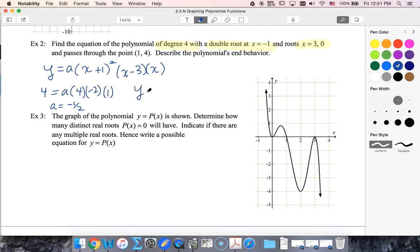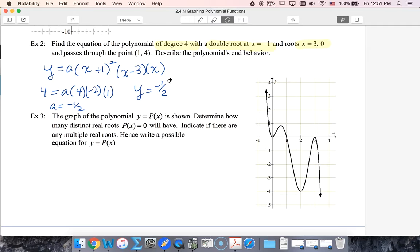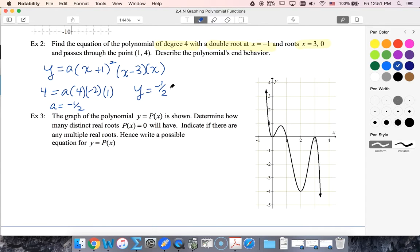So my polynomial's final equation - let's rearrange this to put the x first - is negative one-half times x times x minus three times x plus one squared.